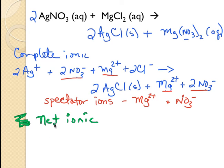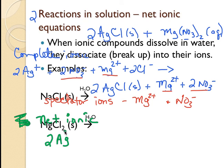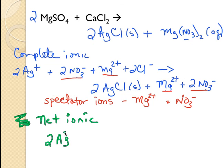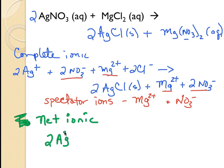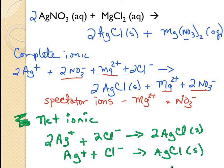To write that, we write what's called a net ionic, and we only write the ions that are participating in the reaction, that being my silver ion and my chloride ion reacting to form my silver chloride solid. And I can actually reduce this. That's called a net ionic, where I only write the ions that are actively participating in the reaction and the products formed.